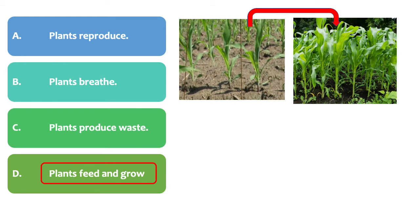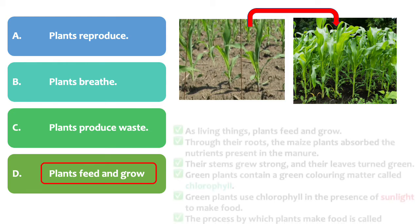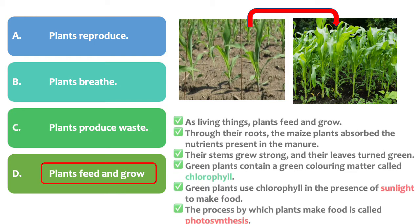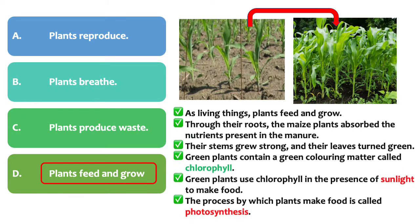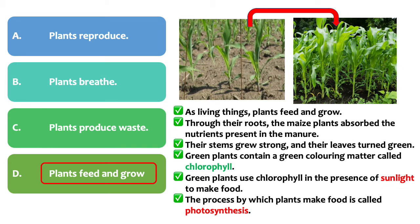This is the answer. As living things, plants feed and grow. Through their roots, the maize plants absorbed the nutrients present in the manure. Their stems grew strong, and their leaves turned green. Green plants contain a green coloring matter called chlorophyll. Green plants use chlorophyll in the presence of sunlight to make food. The process by which plants make food is called photosynthesis.